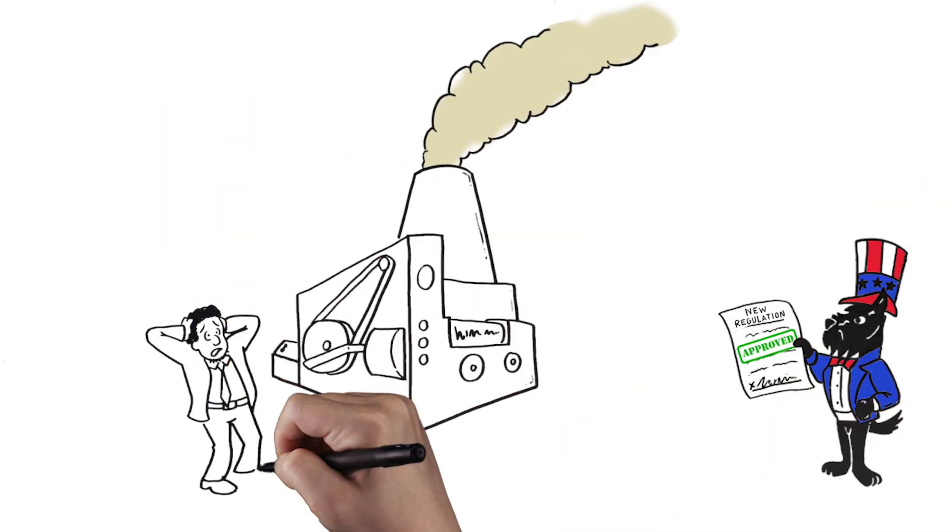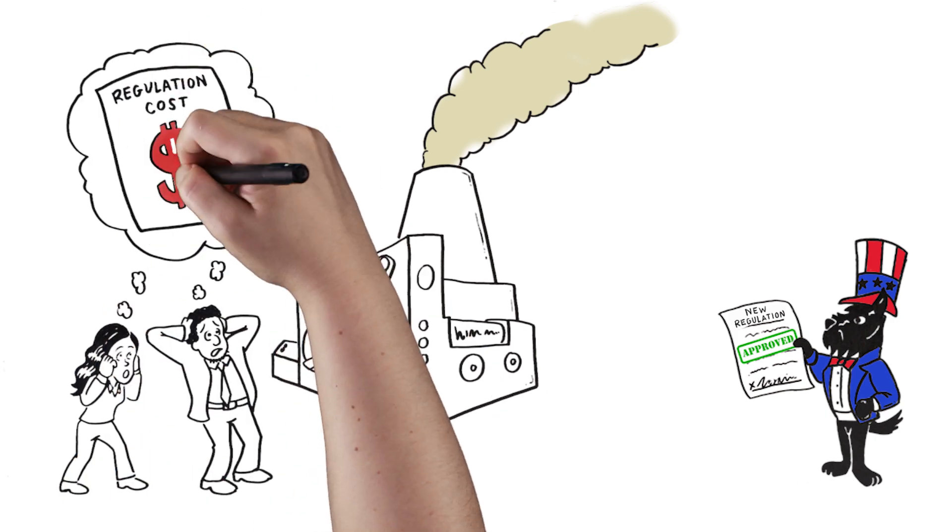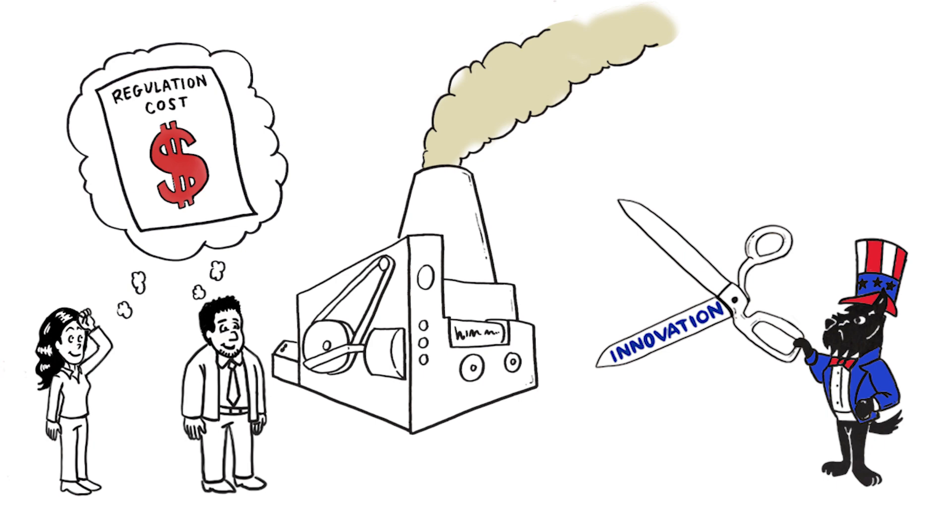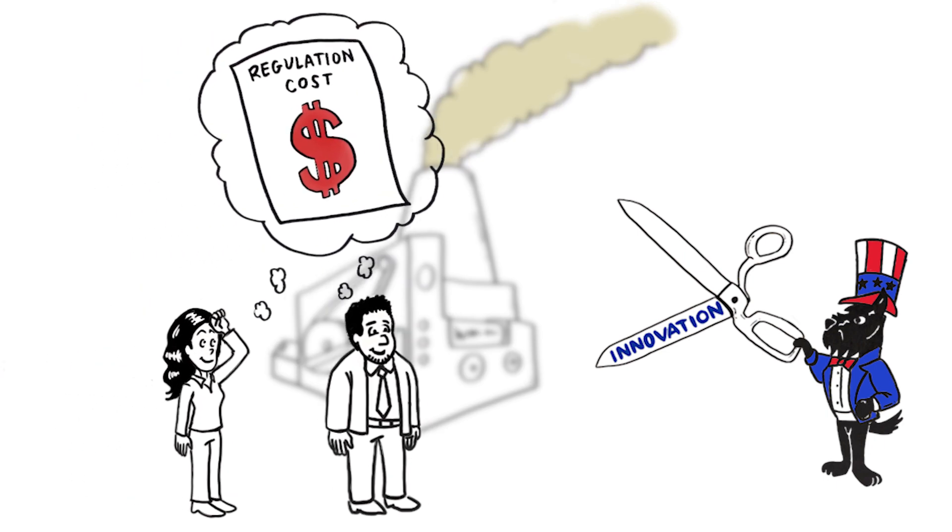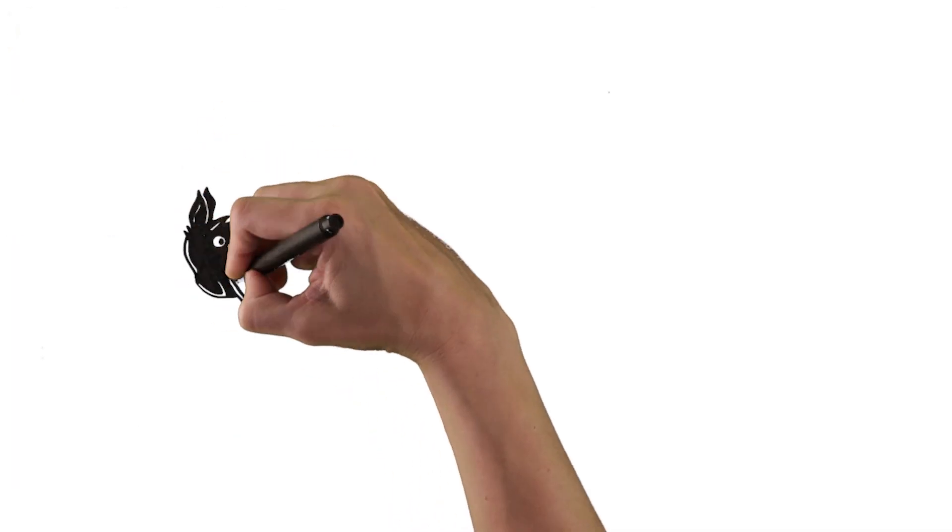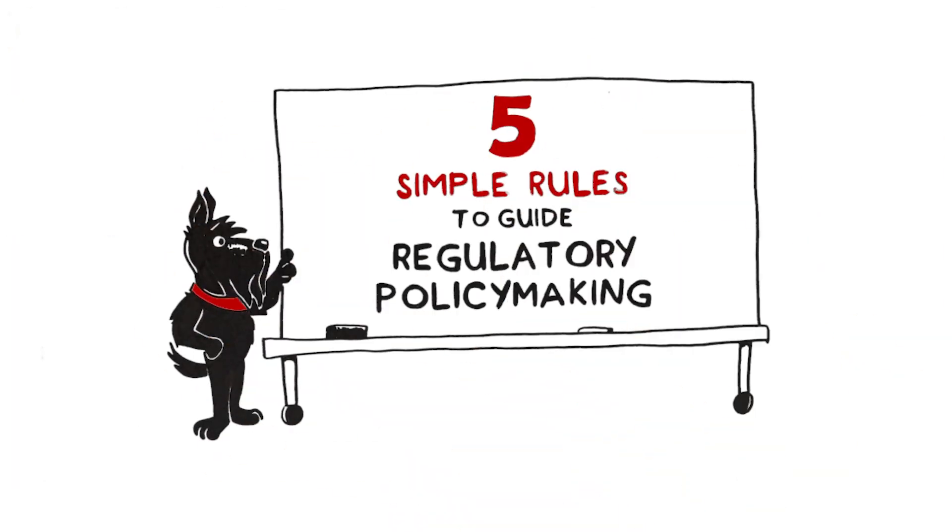Technological innovation doesn't necessarily follow environmental regulation the way night follows day. How policymakers go about their business can have a big effect on whether regulated companies choose to pursue innovation. Experts in this field recommend a few simple rules to guide policymaking.